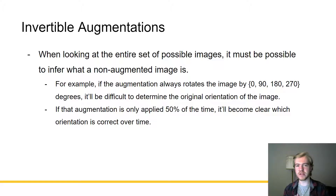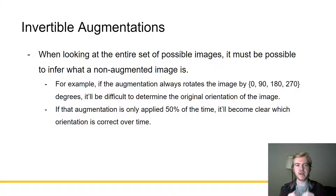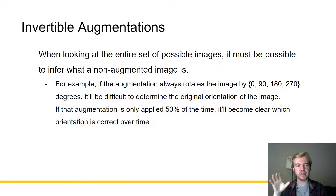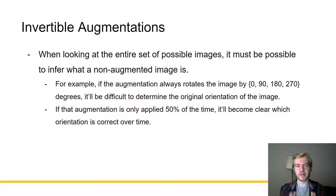It's very important that the augmentations are invertible. When looking at the entire set of possible images, it must be possible to infer what a non-augmented image is. For example, if the augmentation always rotates the image by 0, 90, 180, or 270 degrees in some random orientation, it'll be difficult to determine the original orientation. Since the generator only gets signals from the discriminator, it won't be able to tell that facial images are supposed to be in a particular orientation. However, if that augmentation is only applied 50% of the time, it will become clear over time which orientation is correct.